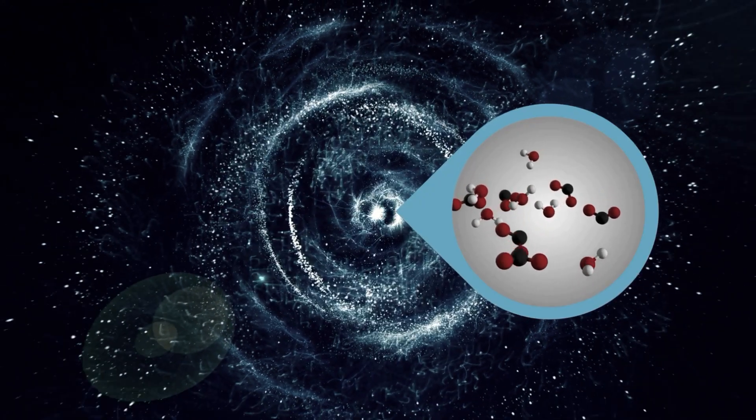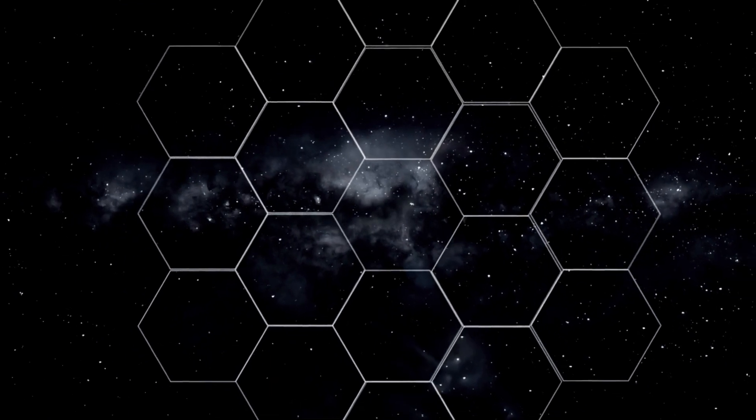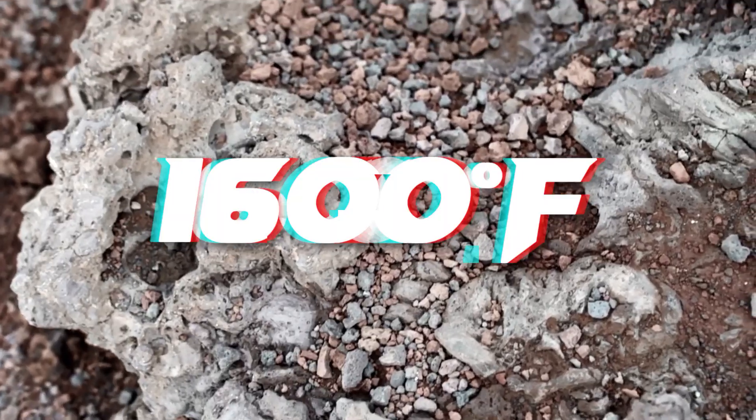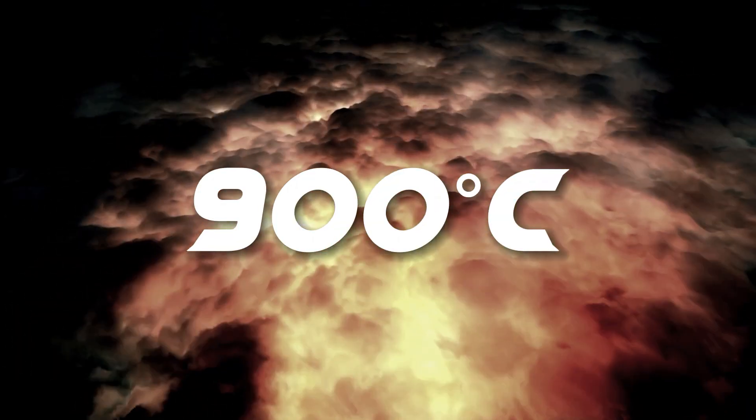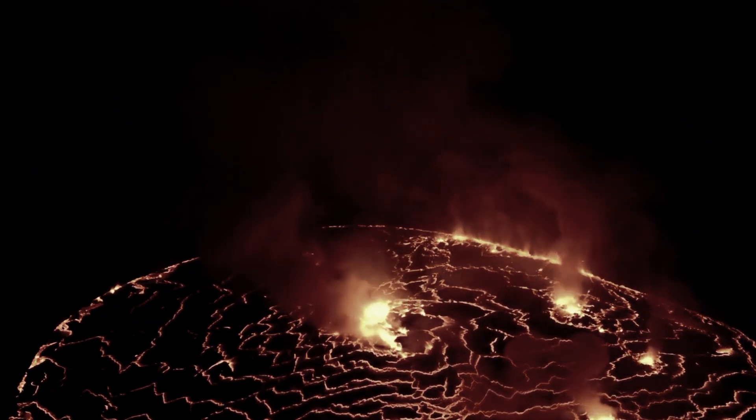While there is no life on this planet, as it is about 1600 degrees Fahrenheit or 900 degrees Celsius, carbon dioxide is needed for life as we know it.